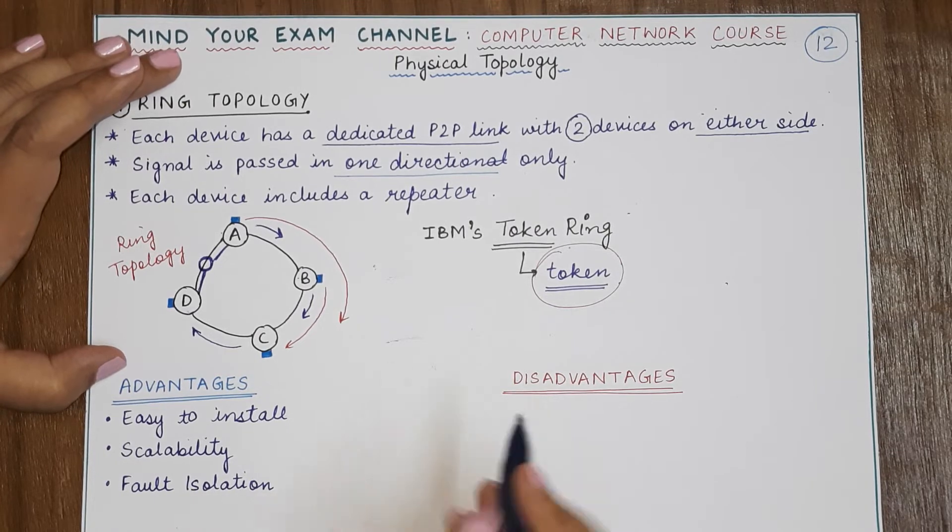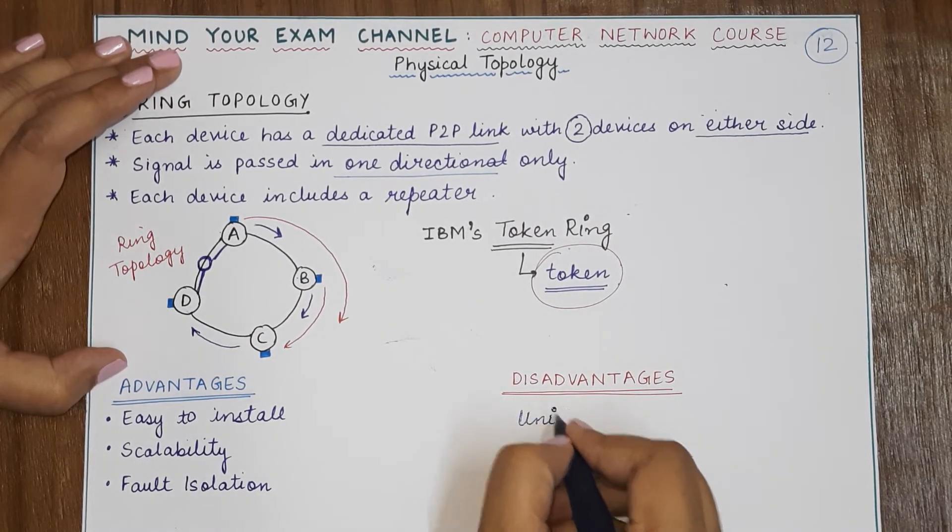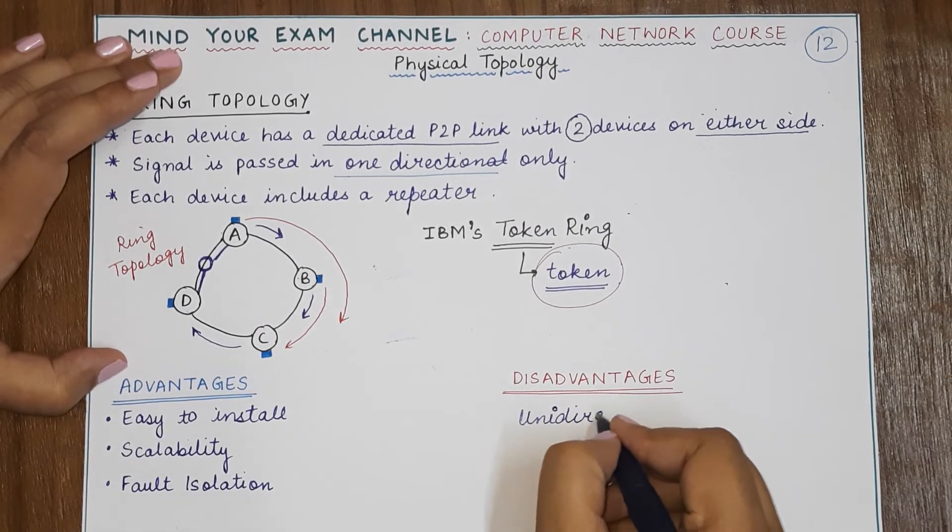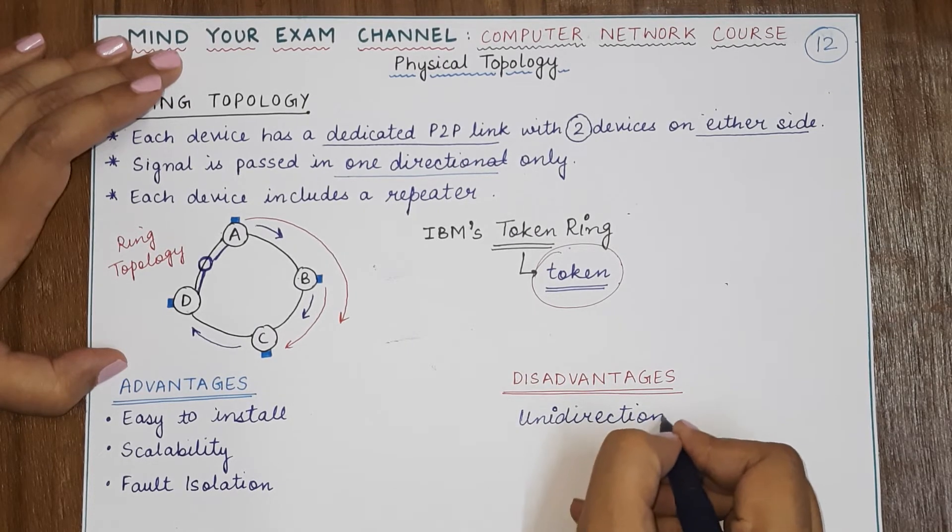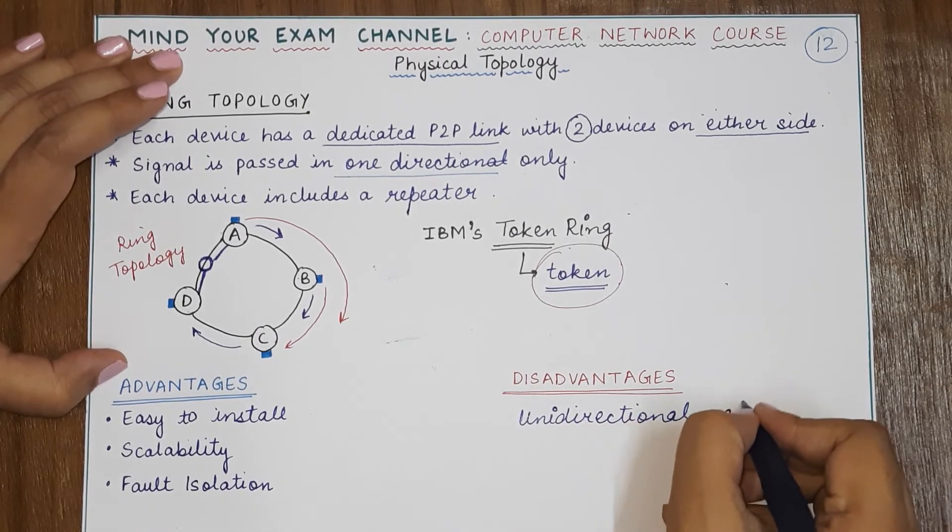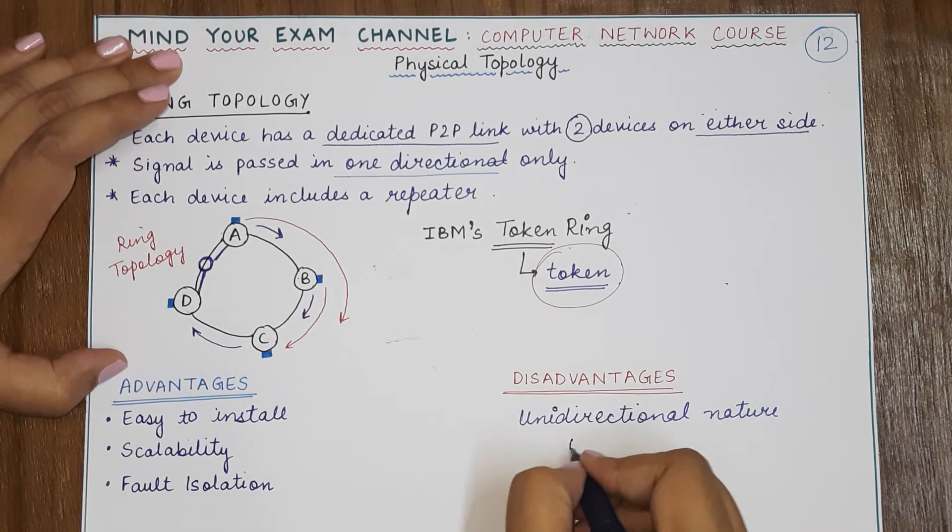Now the disadvantage is the unidirectional nature of signal transmission—the unidirectional nature of signal transmission.